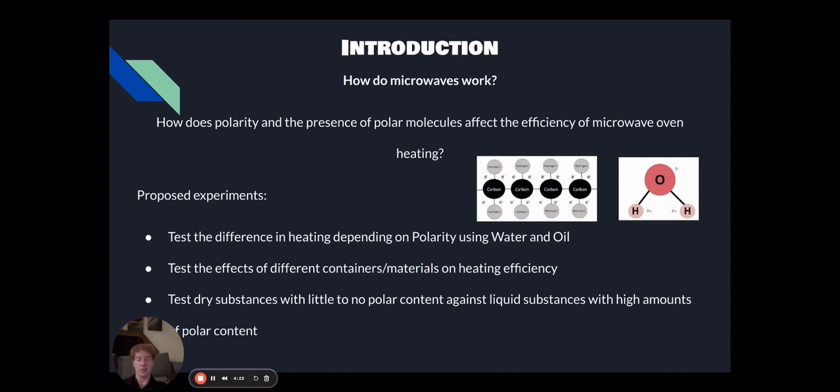The second was to test the effects of different containers made of different materials on heating efficiency within a microwave oven. This would include plastic, glass, metal, and ceramic.